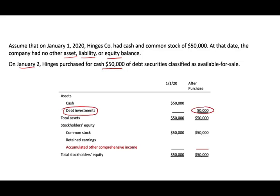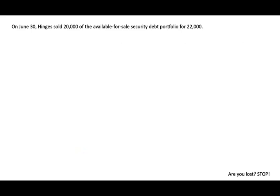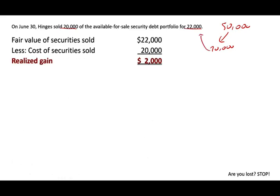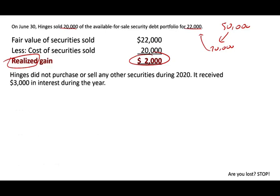We took the $50,000 cash and bought investments, so we now have debt investments of $50,000. Mid-year, around June 30th, we sold $20,000 of the available-for-sale securities for $22,000. That means we had a realized gain of $2,000 — realized gains go on the income statement. Also, because we held those securities, we received $3,000 in interest, which is interest income that also goes on the income statement.